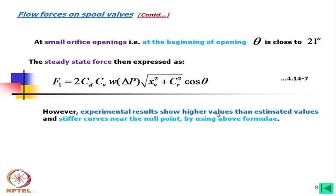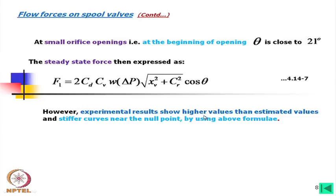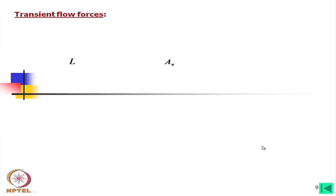Experimental results show higher values than estimated near the null point with stiffer curves. The null position is only at the beginning, and control is not typically exercised there. The higher forces at the beginning can be overcome, though controlling at the null point requires additional consideration.